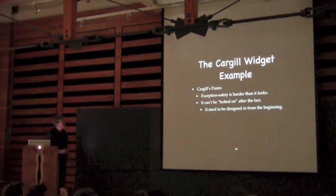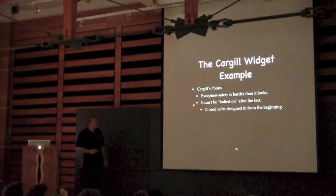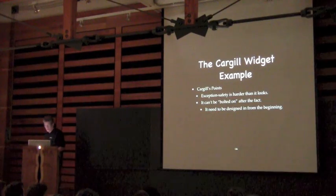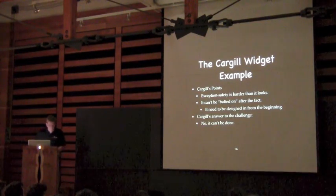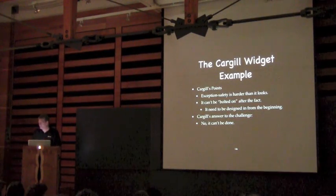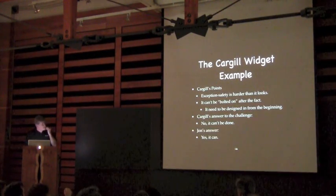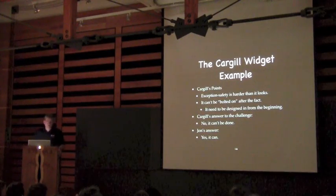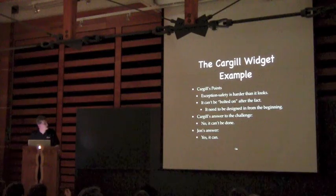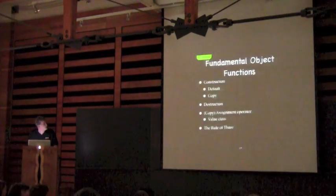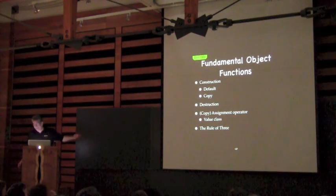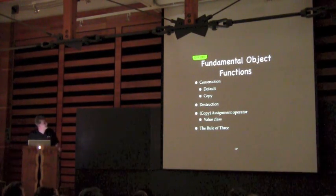So Tom Cargill said: exception safety is harder than it looks. It can't be bolted on. We need to think about it from the beginning, put it in the interface, think about how we're going to be exception safe. His answer was: no, you can't do this — you've got to think about it in advance. I say we can do it, and I'll show you a solution in a little while. Of course I cheated. I'm not smarter than Tom Cargill.